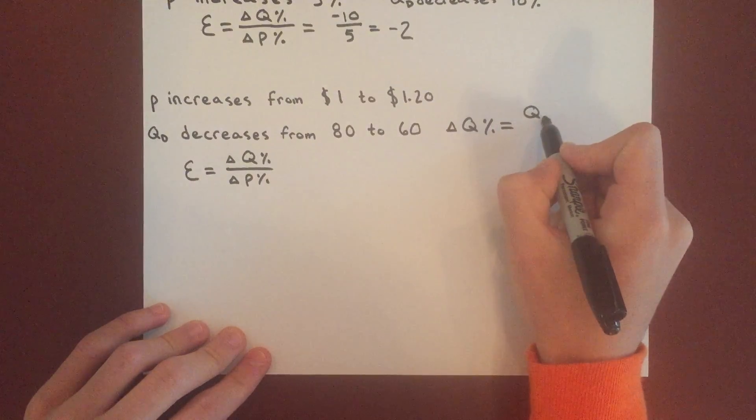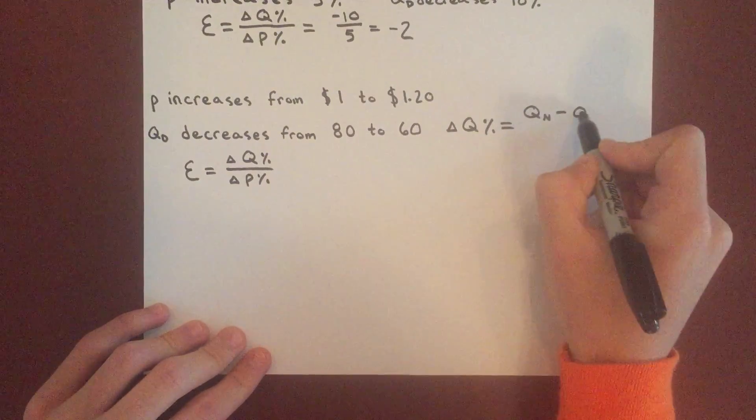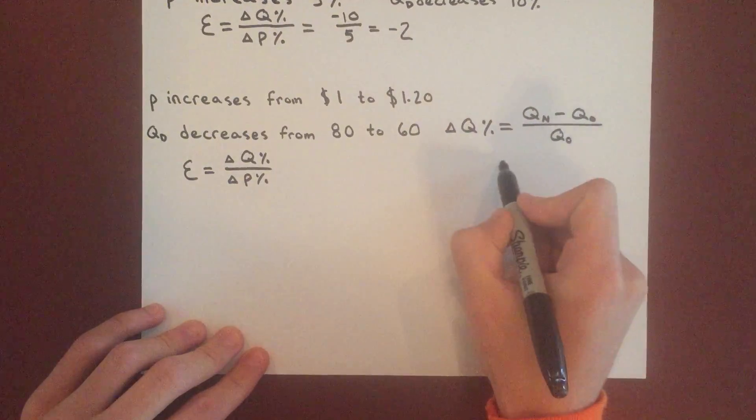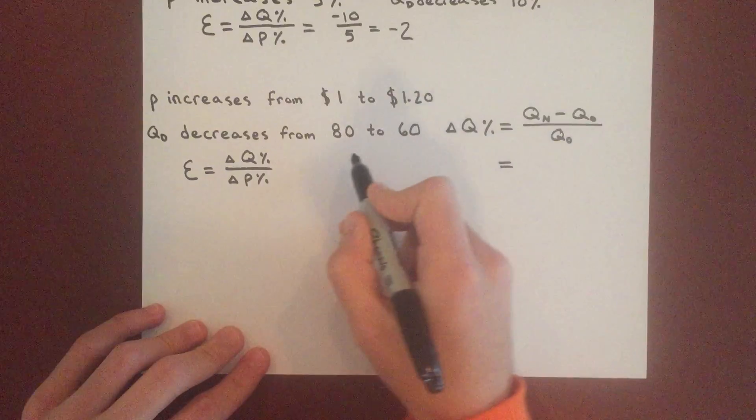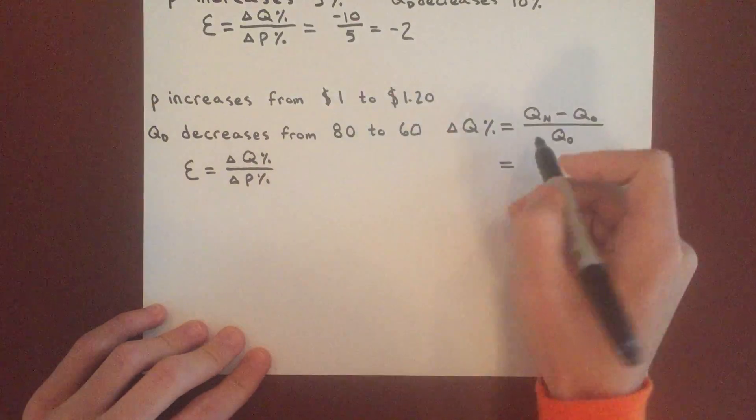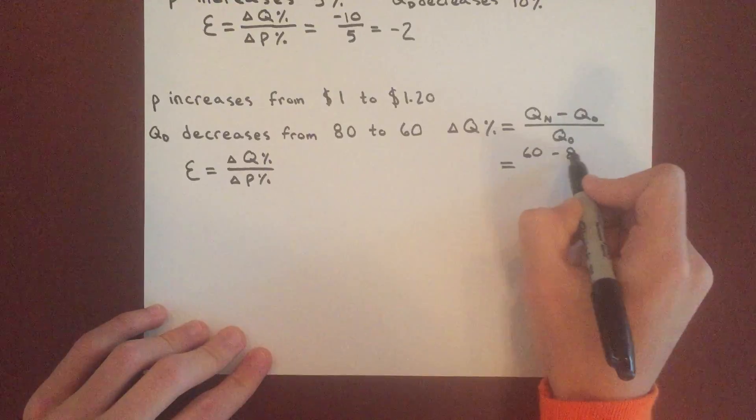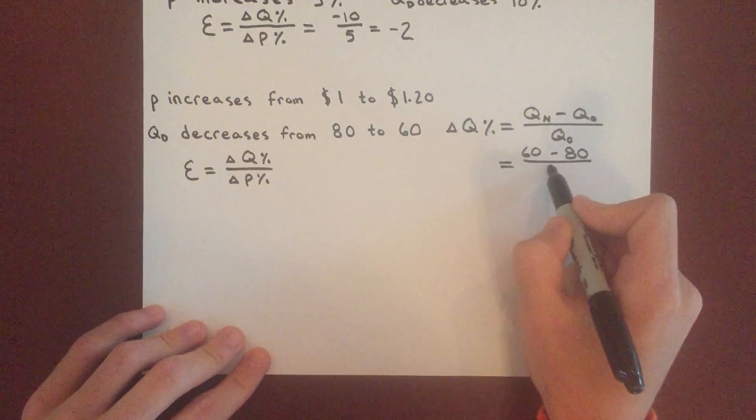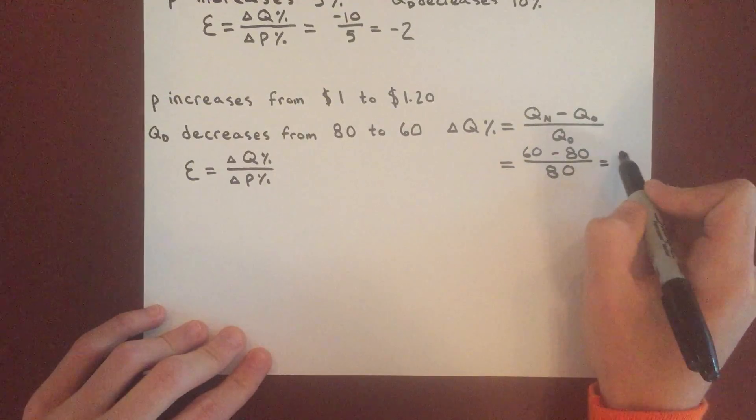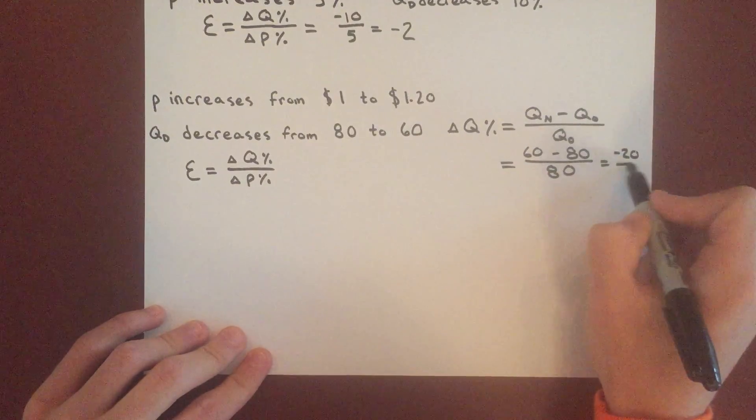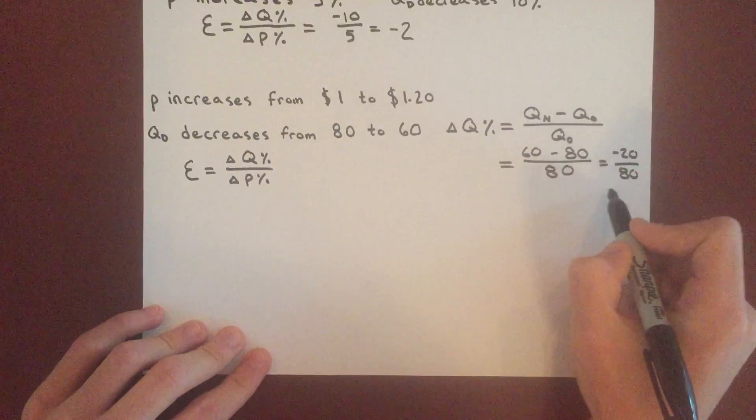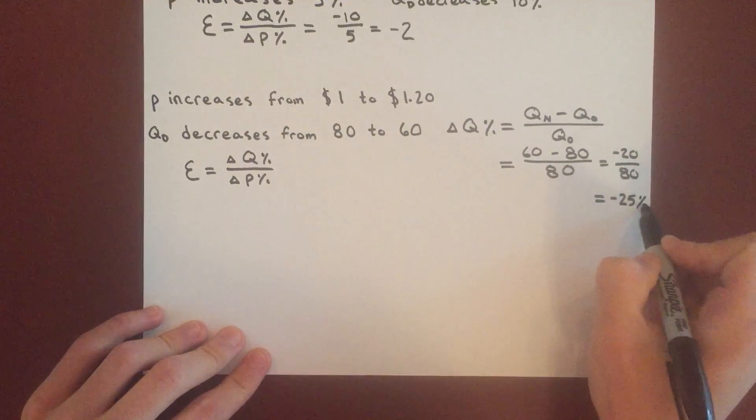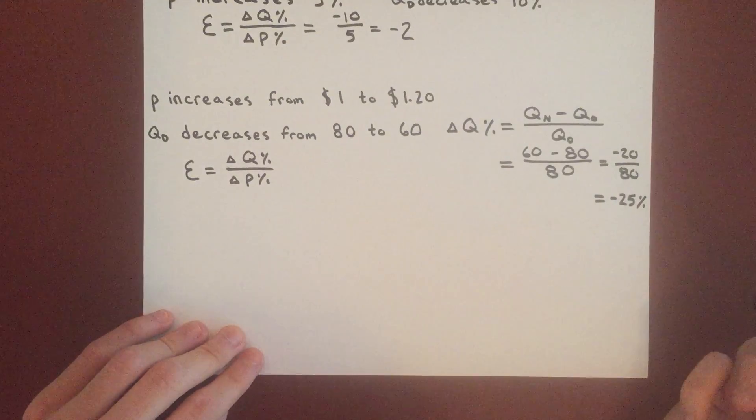Percentage change in quantity equals the new quantity minus the old quantity over the original quantity. It decreases from 80 to 60, so 60 is new minus 80, all over the original which is 80 again. That's negative 20 over 80, which is going to be a quarter, or negative 25%.